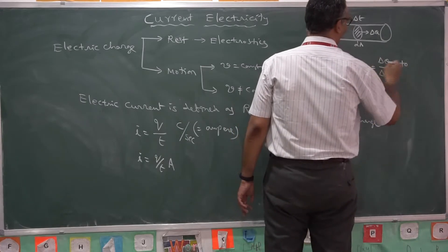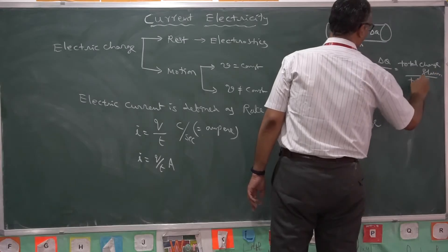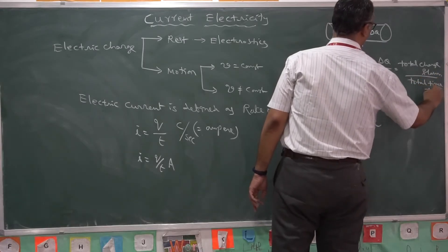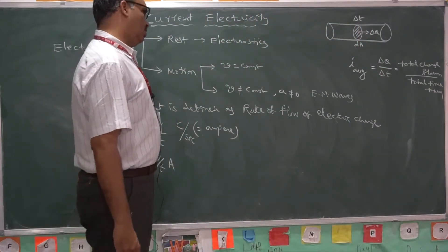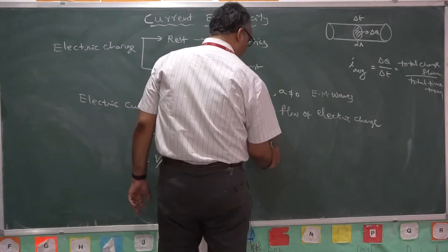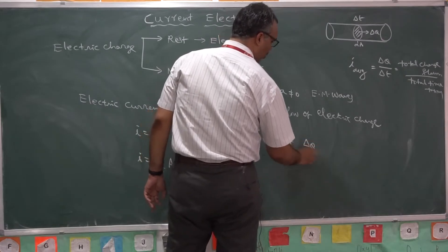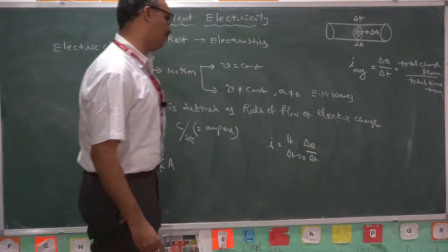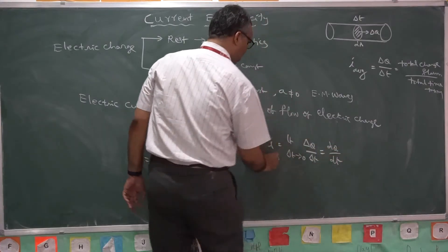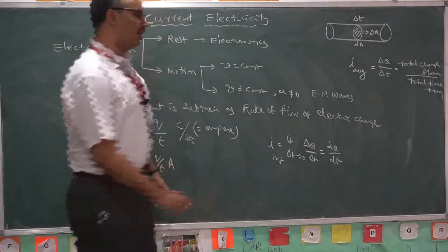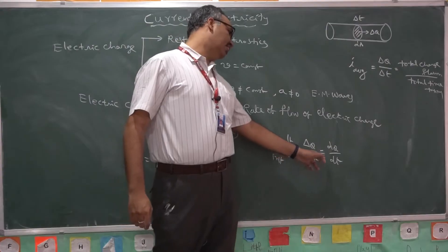What is the definition of average current? Total charge flown by total time taken is called average current. Similarly, if I take the limit of the time interval — the same total charge by total time taken observed for a short interval of time — then it is called dQ by dT as per mathematics. In physics, it is called instantaneous current.